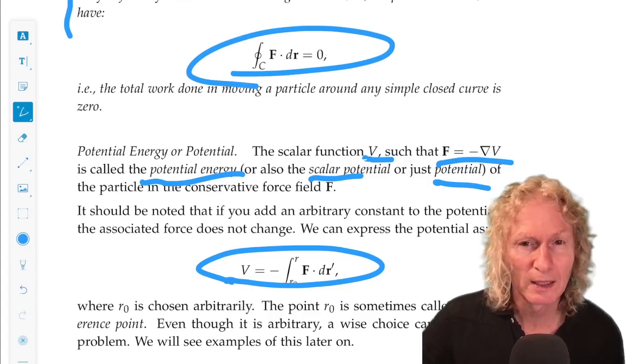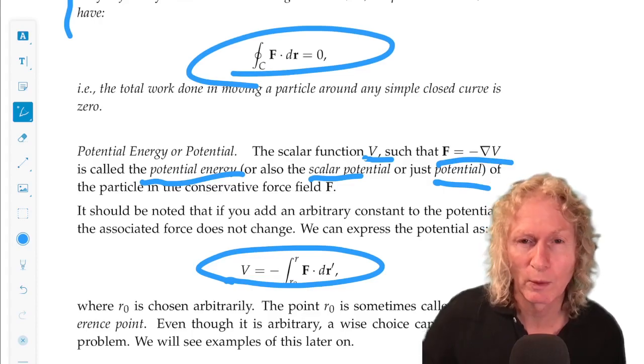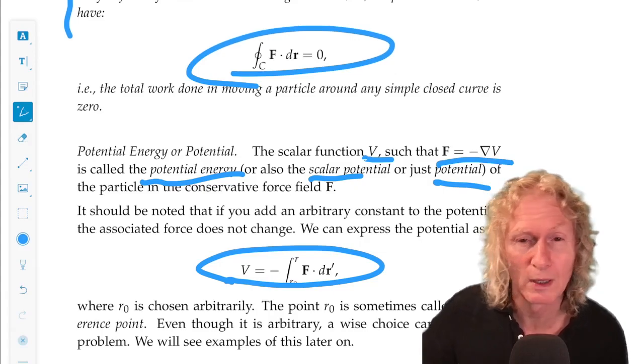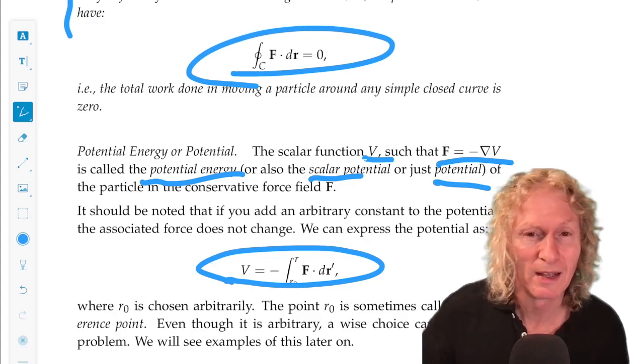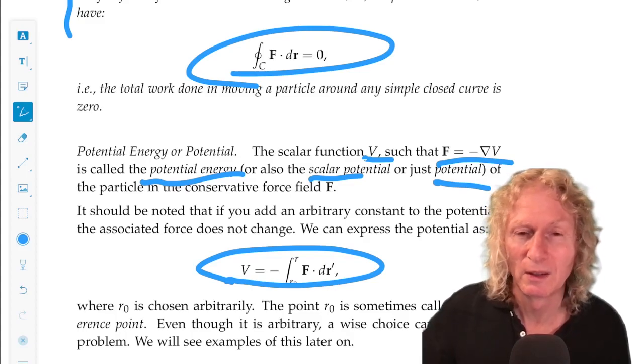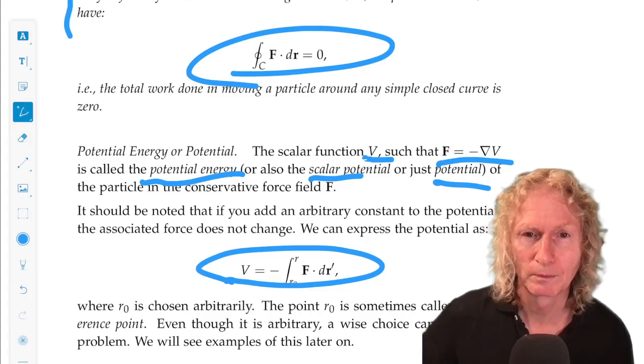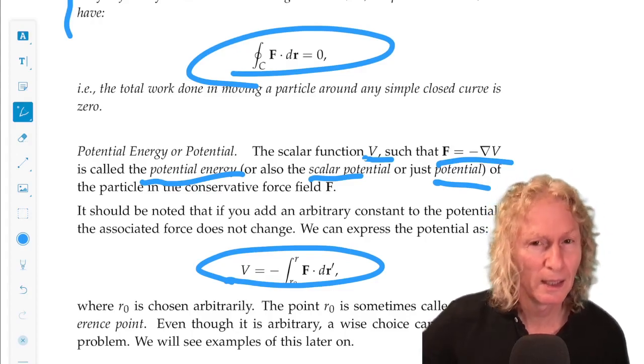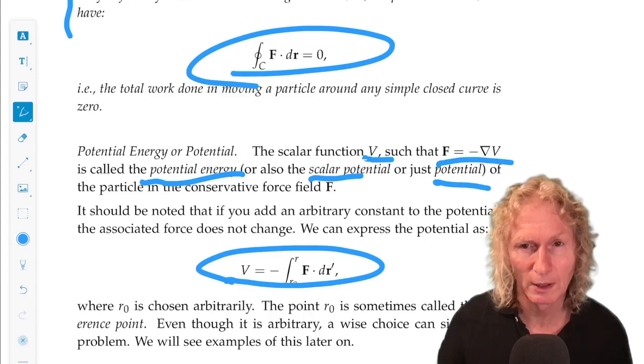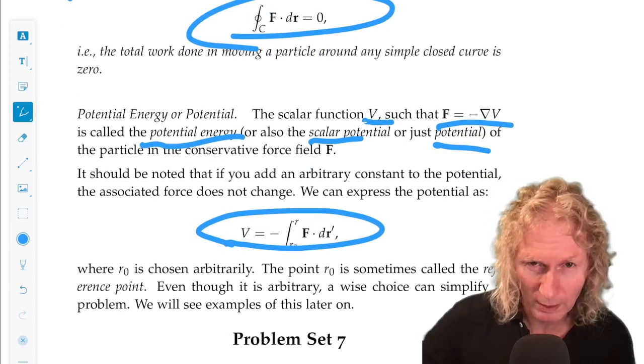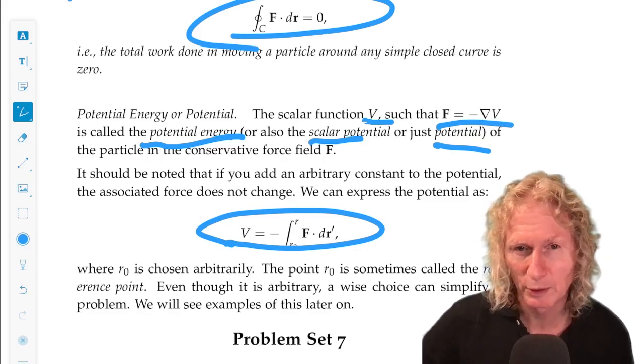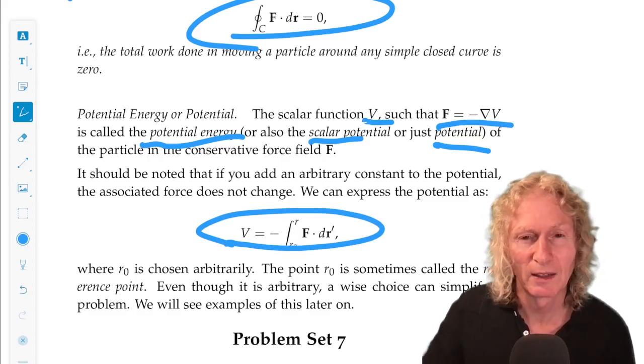And remember, in that case, we found this special integral, one-half mv squared plus V of r. That, I said, looked like energy, kinetic plus potential, and now that's exactly what we're seeing here. But I haven't talked about what kinetic plus potential energy will mean. That's in the next chapter.